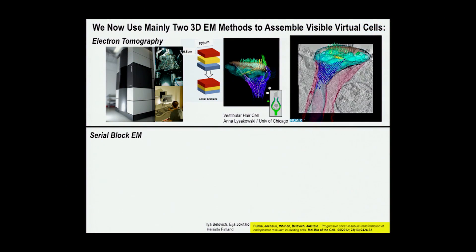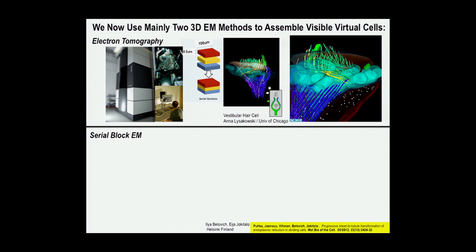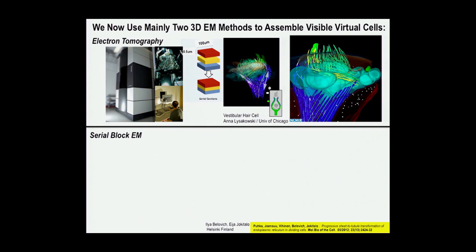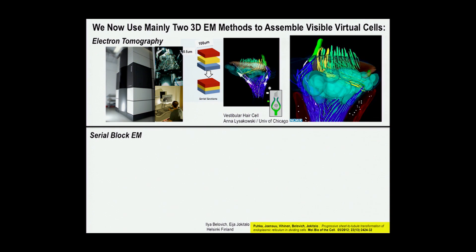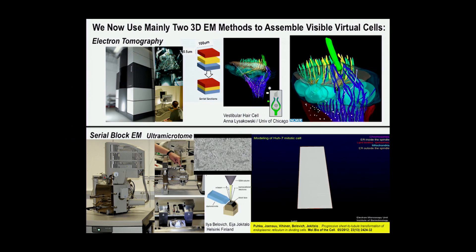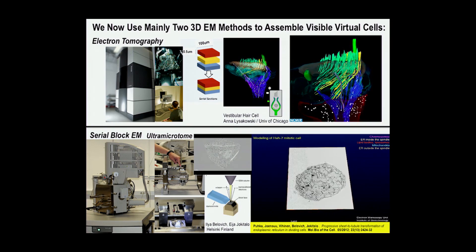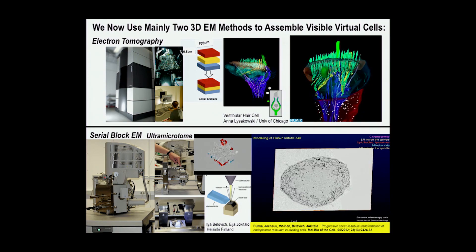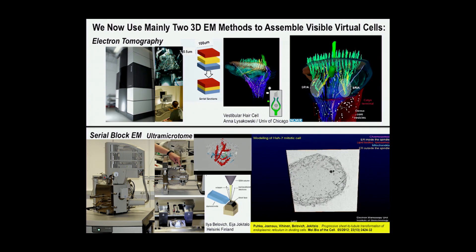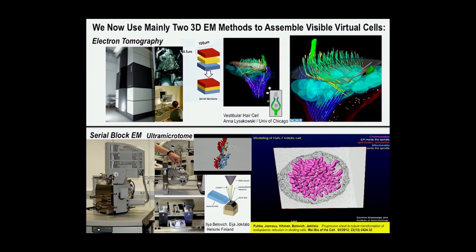One is serial section electron tomography, where we take thick sections, map them to get the best X, Y, and Z resolution. We look at systems that can be manipulated — for example, a vestibular hair cell that rocks and changes its output. Or we use a method pioneered by Winfred Denk called serial block face imaging — you'll see an alternative of this from Harald Hess shortly — where you put a microtome inside a scanning EM and automatically record image after image, like slicing a loaf of bread, to get a reconstruction with modern methods.